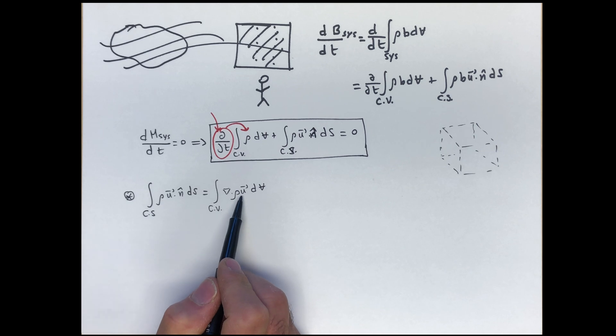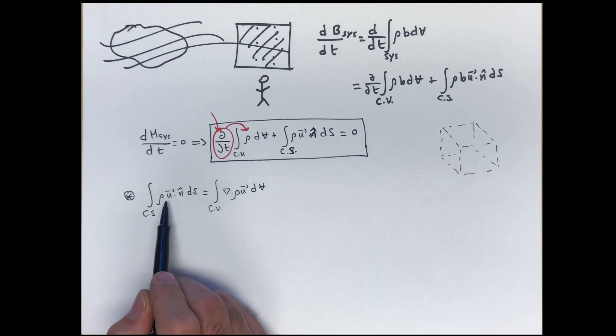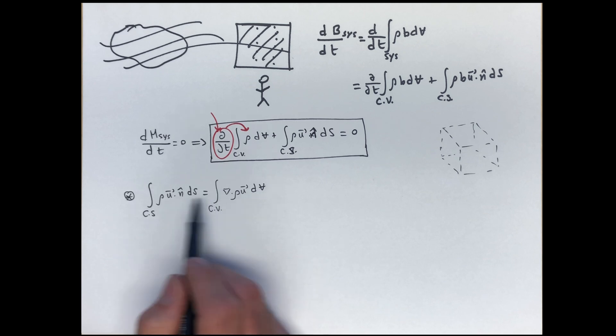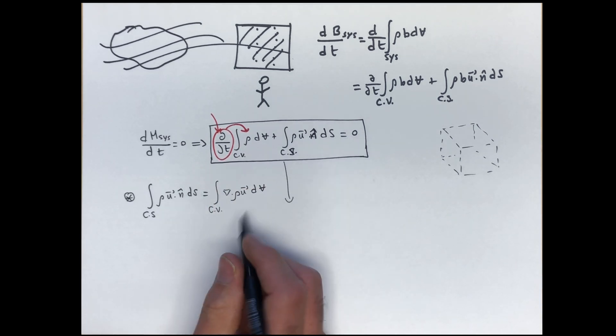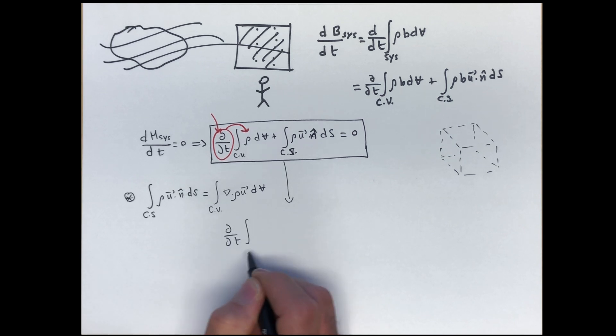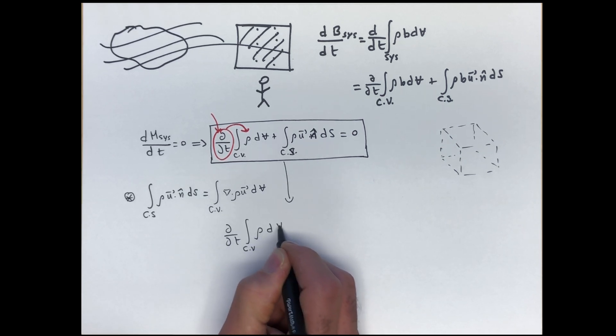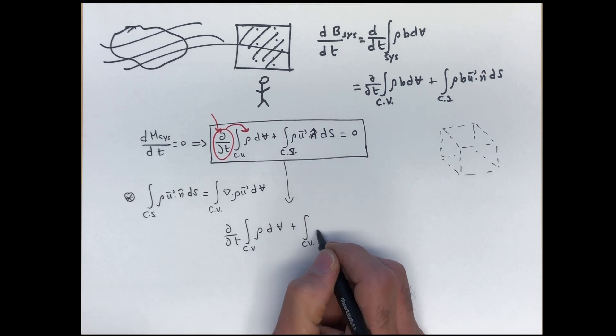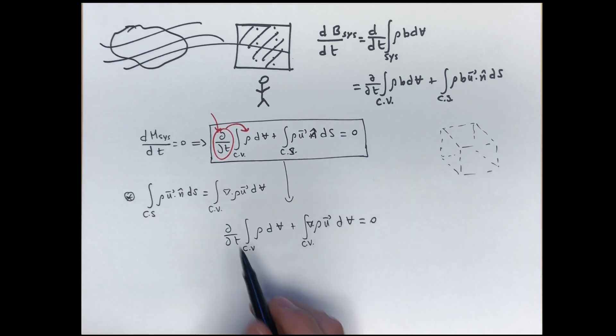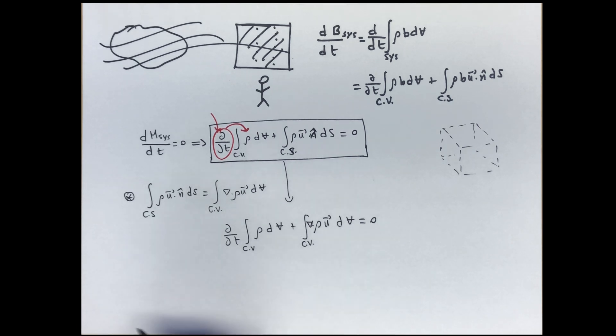Now, we had talked about this before, but we applied it to the concept of the integral over the velocity. Now in this case, we have the integral over ρu. Now we've converted the surface integral to volume integral. So now our continuity equation becomes d/dt the integral over the control volume of ρ dV, plus the integral over the control volume of div ρu dV equal to zero. If only we can move this time derivative to the inside of this integral, then we can combine both of these into one volume integral and then do something really cool with that.